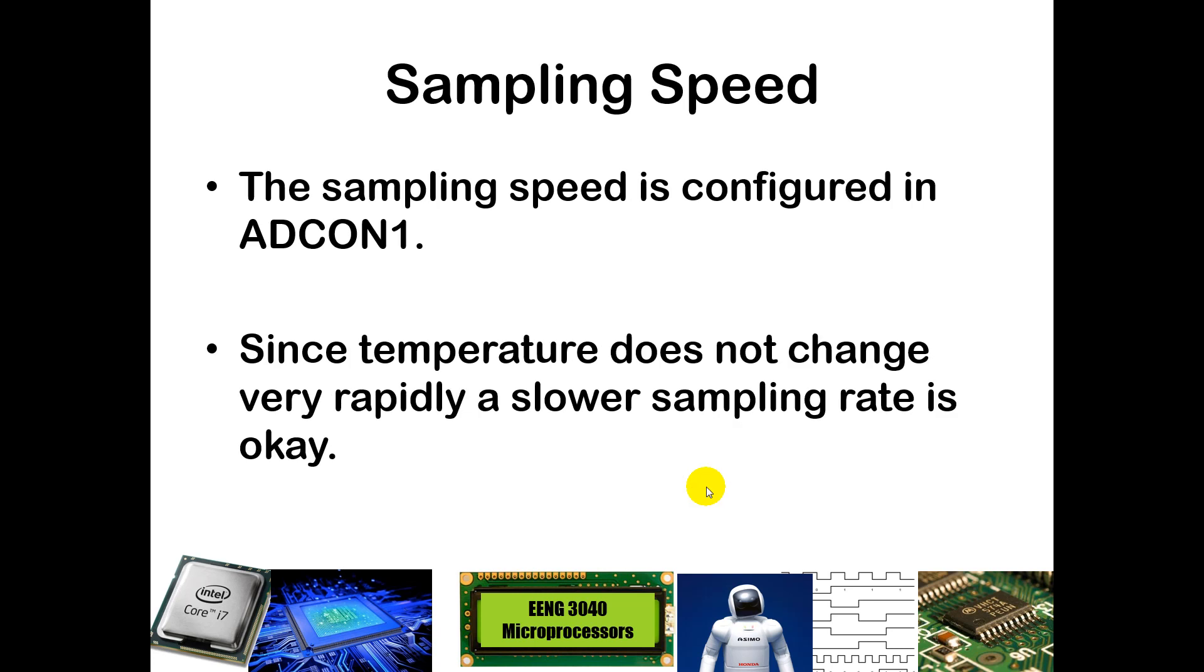In terms of sampling speed, the sampling speed is configured in the ADCON 1 register. Since temperature typically does not change very rapidly, you're not going to see multiple changes in a second of a significant change in temperature, we are going to be able to sample rather slowly. A slower sampling rate will allow us to reduce the energy consumed by the chip and allow us to sample at an appropriate rate.